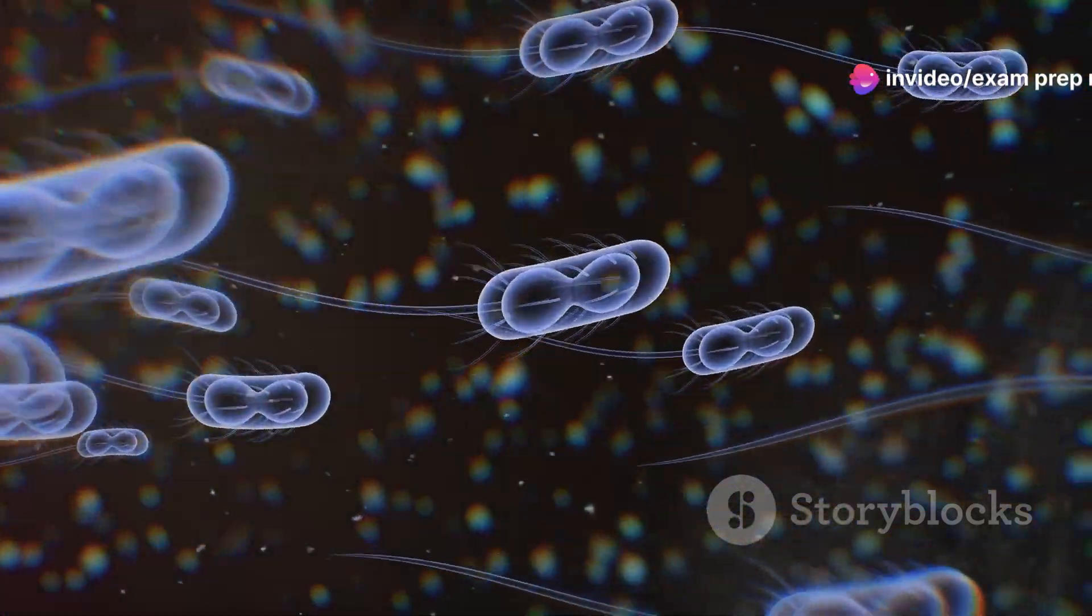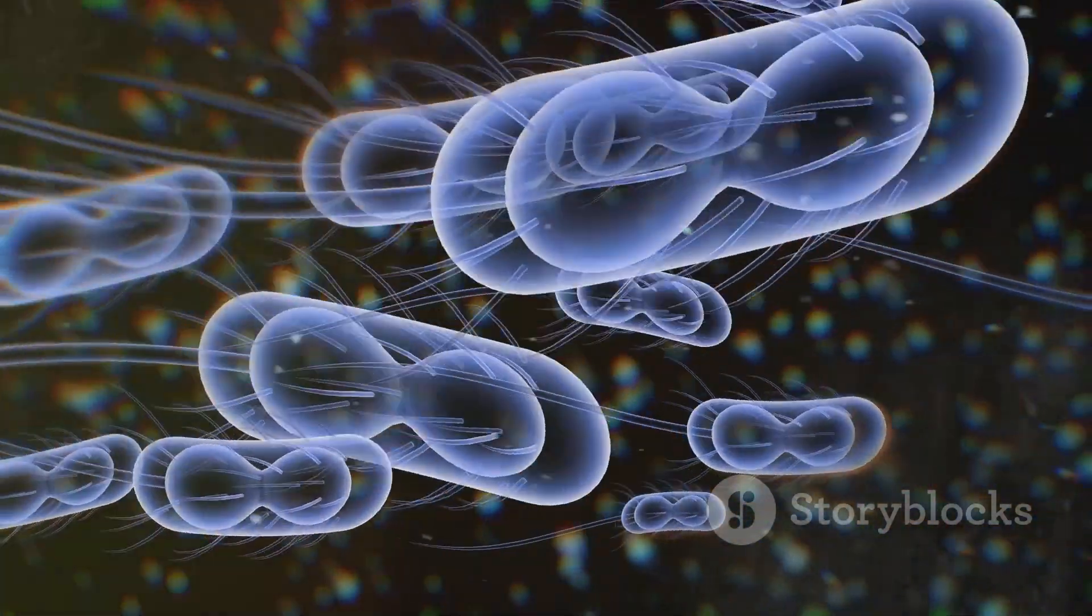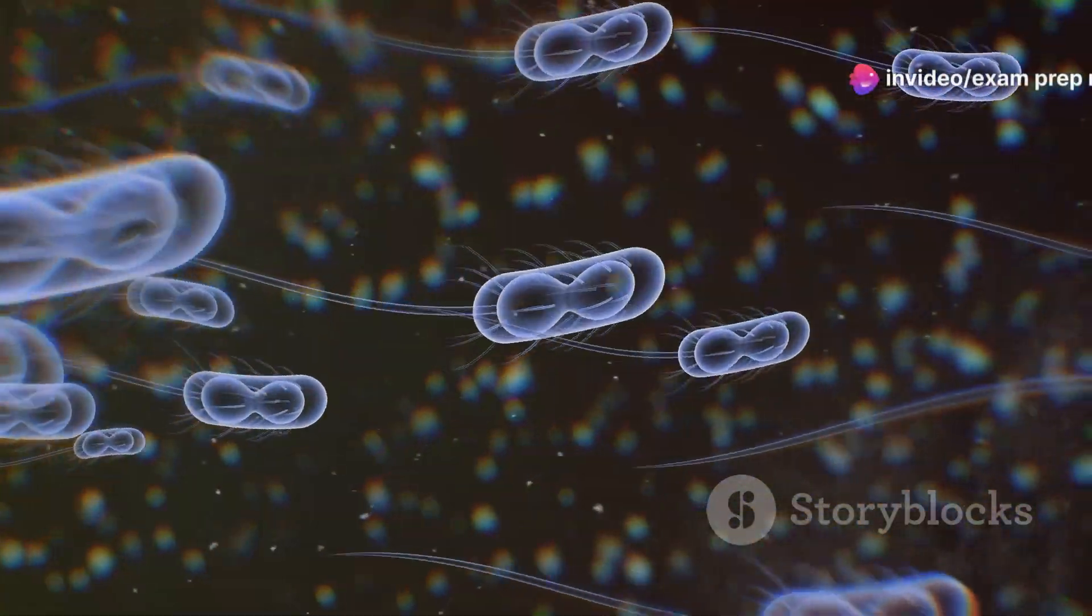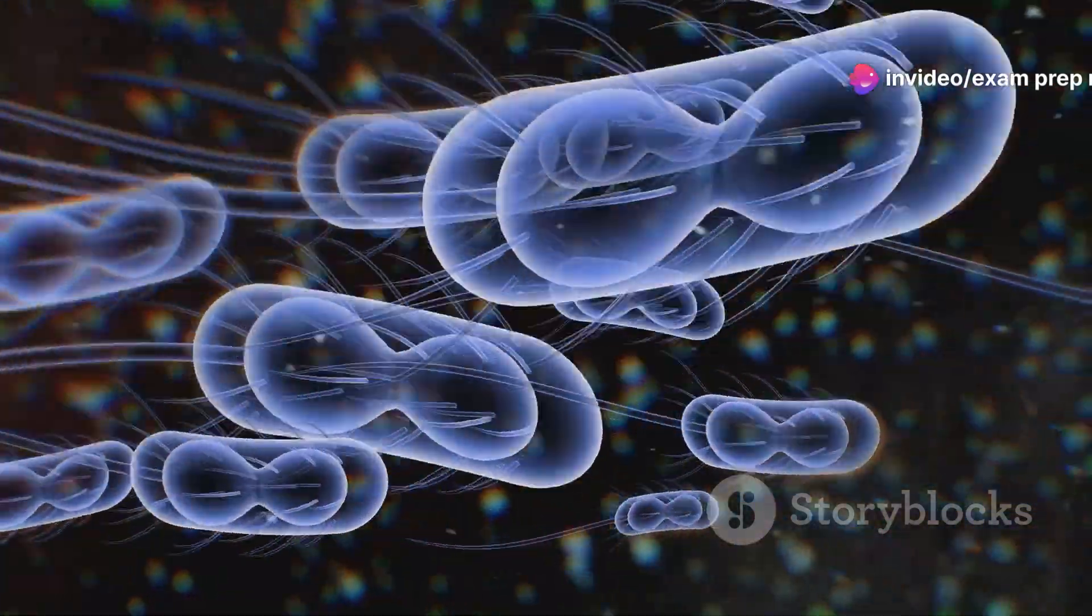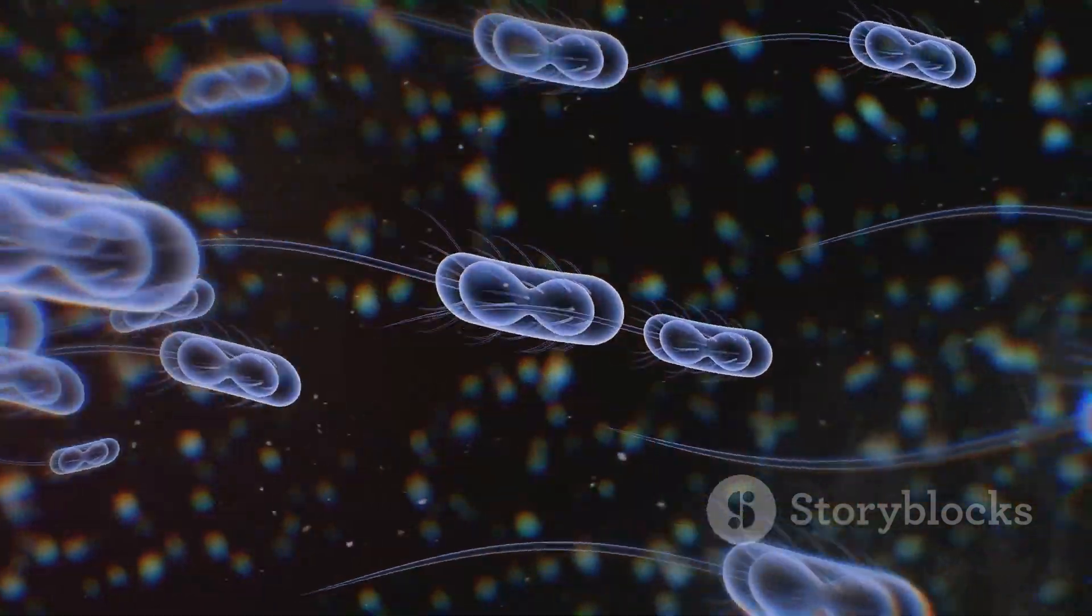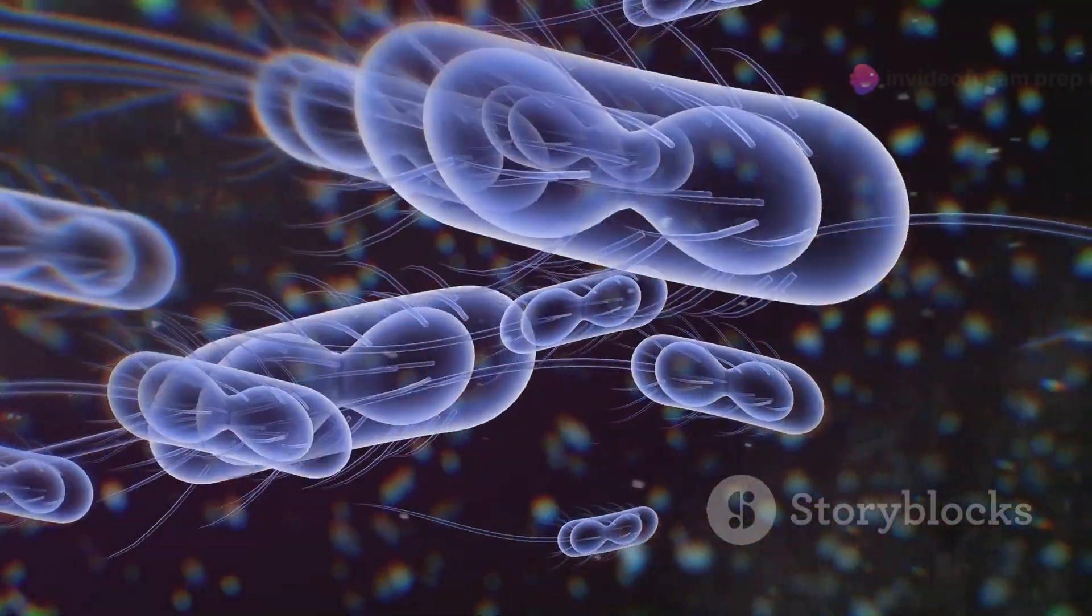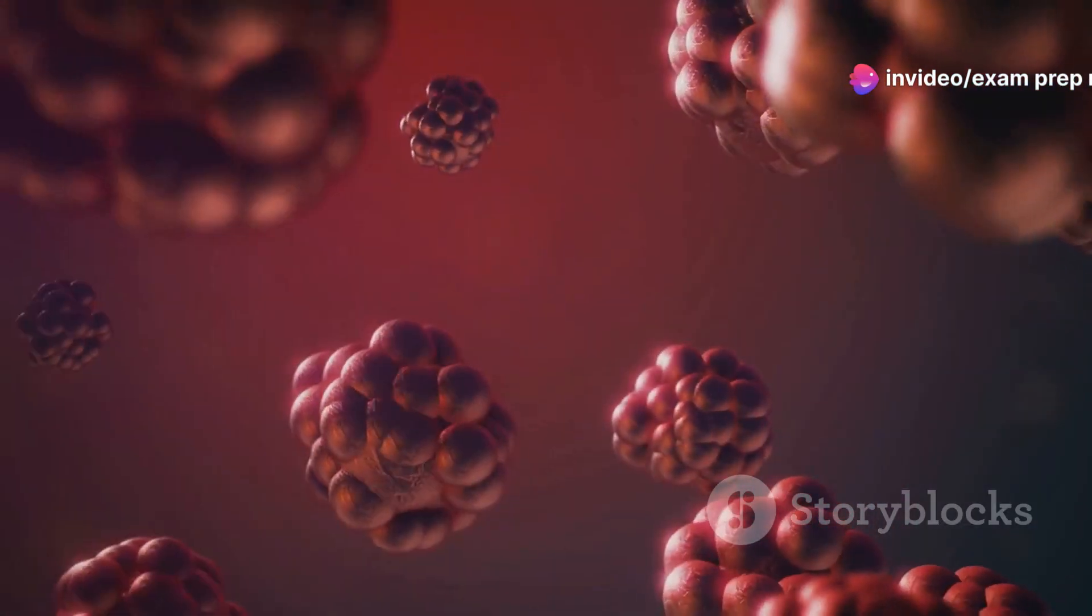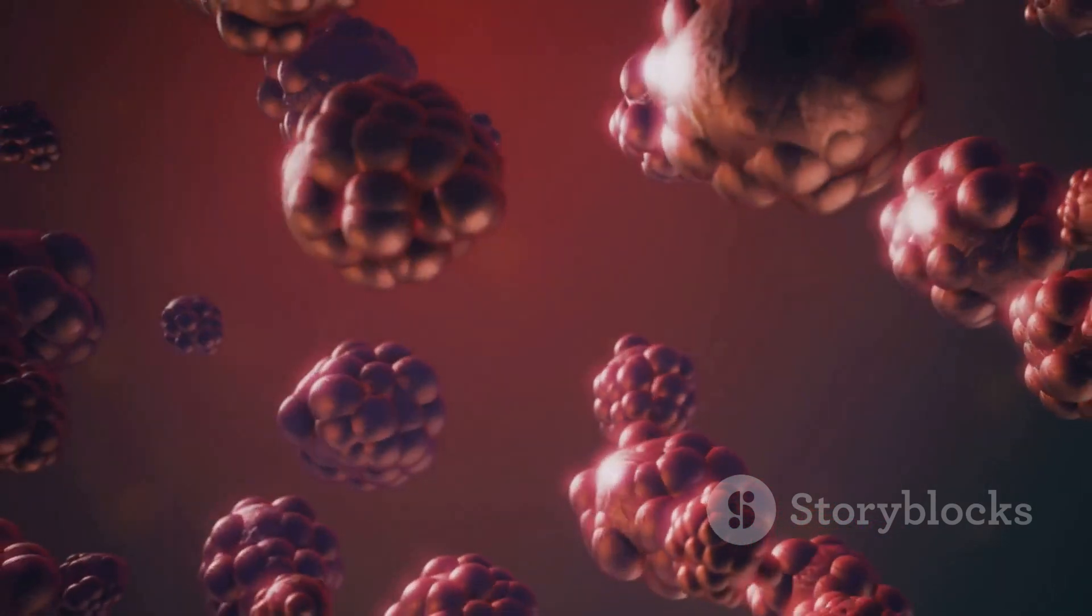Cyanobacteria are also nitrogen fixers, meaning they can convert atmospheric nitrogen into a usable form for other organisms. This process is essential for building proteins and other essential molecules, making nitrogen fixation crucial for life on Earth. Their ability to photosynthesize and fix nitrogen makes cyanobacteria essential contributors to Earth's ecosystems. So, the next time you take a deep breath of fresh air, remember to thank cyanobacteria, the original oxygen producers.